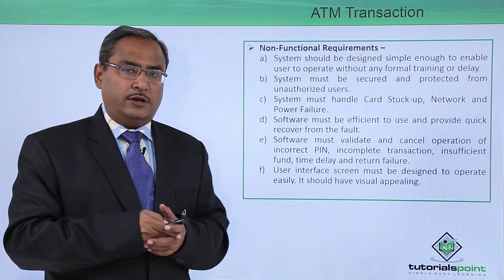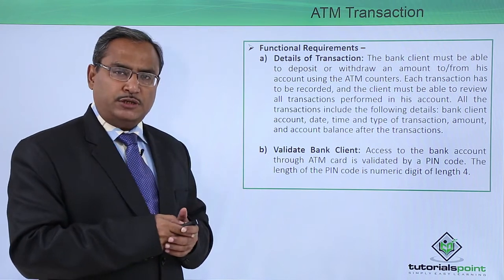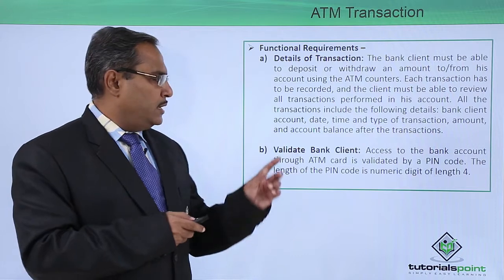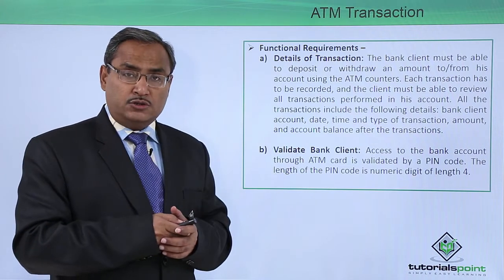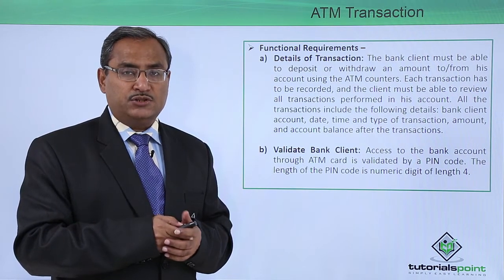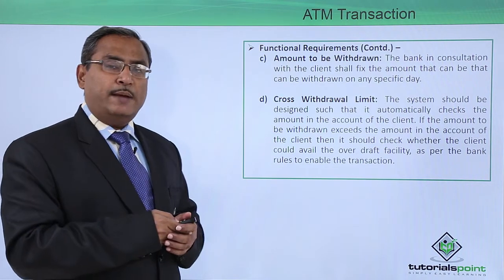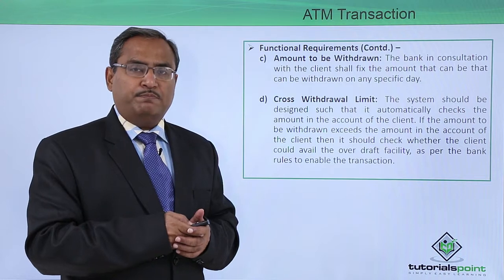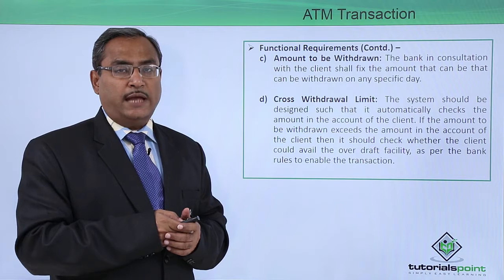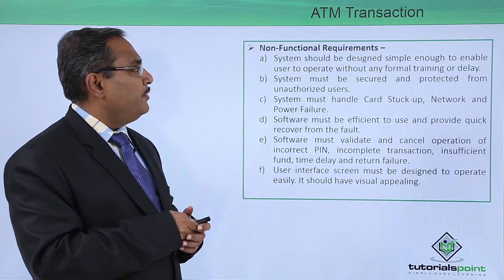Now let us revise the functional requirements we discussed. The first is details of the transaction — what attributes should be kept. The second is validate the bank client — how to check whether the client is valid through the password and the four-digit PIN. The third is the amount to be withdrawn — the maximum amount a client can withdraw per day. The fourth is the cross withdrawal limit — whether the account has overdraft facilities or not. These are the functional requirements.